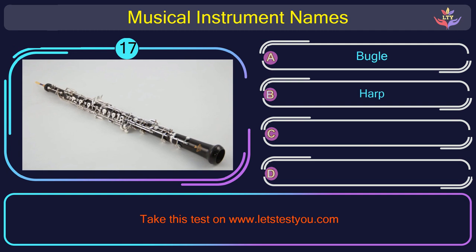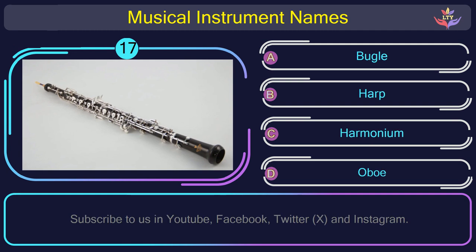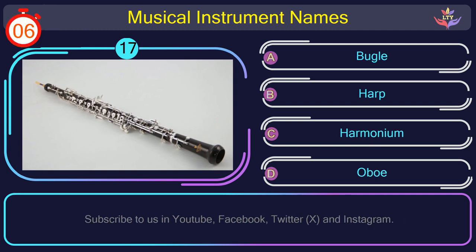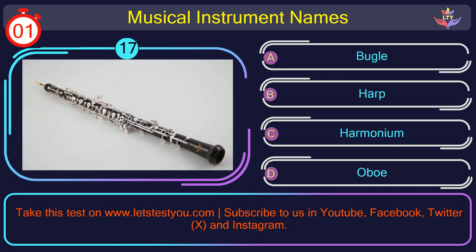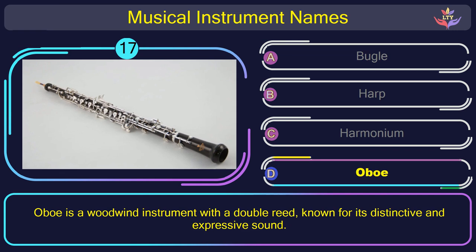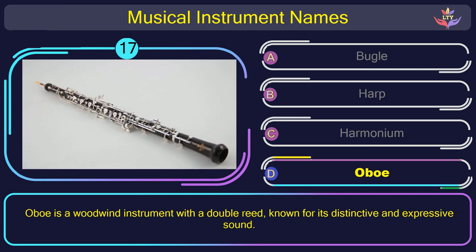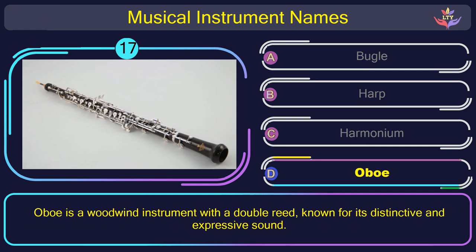Question number 17. Could you recognize the name of the musical instrument in this picture? The correct answer is option D: Oboe. Oboe is a woodwind instrument with a double reed, known for its distinctive and expressive sound.